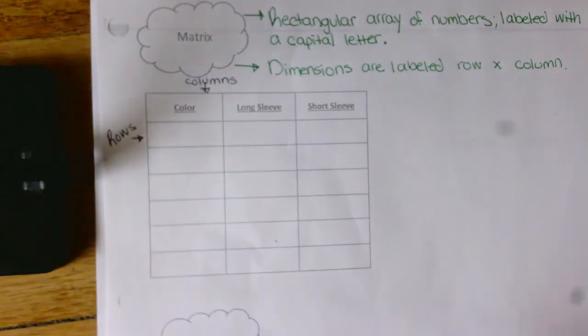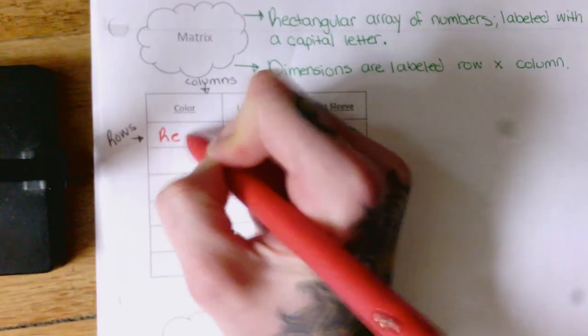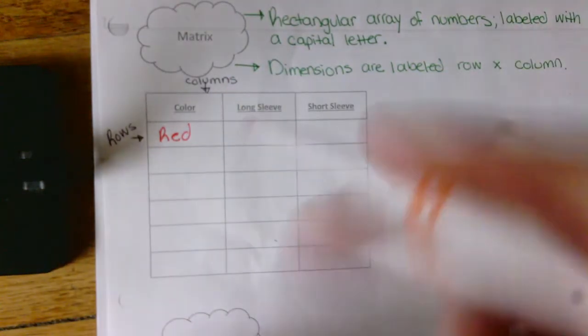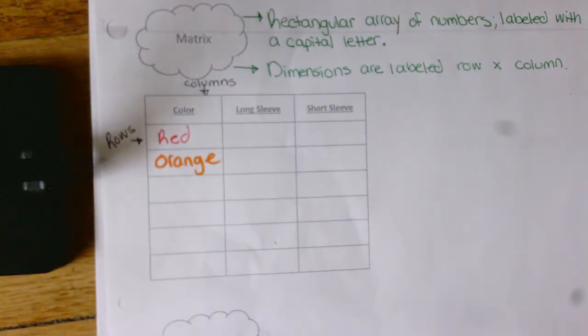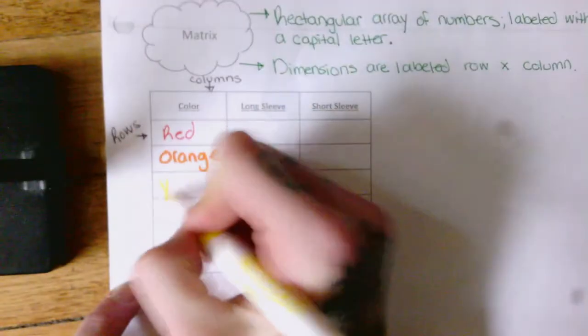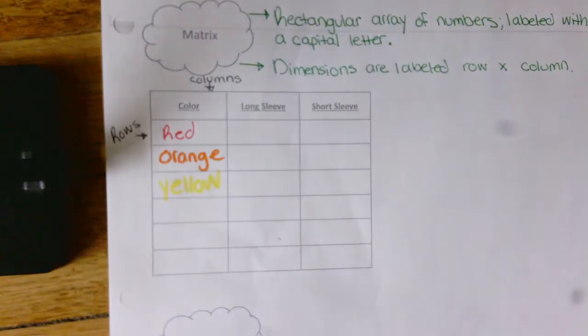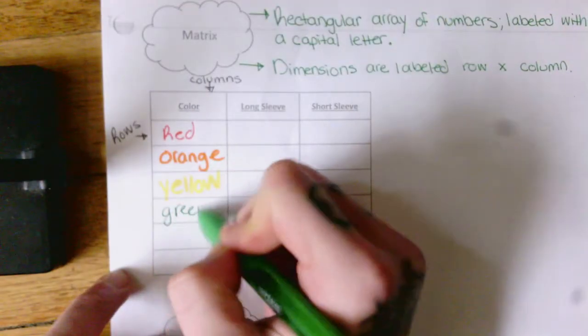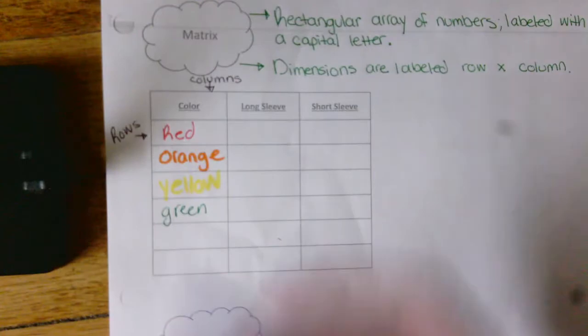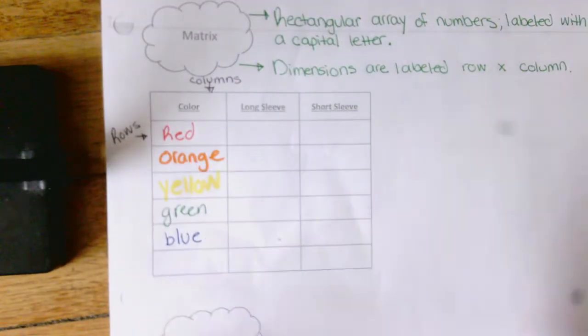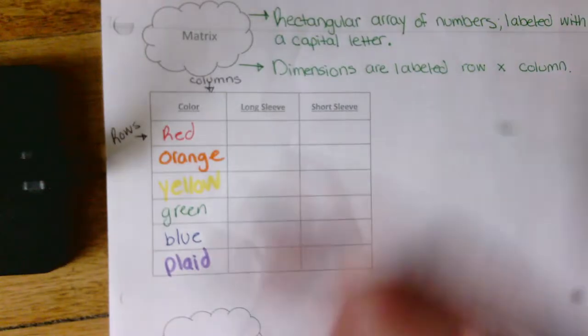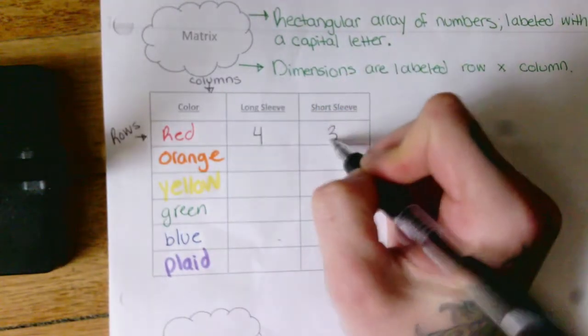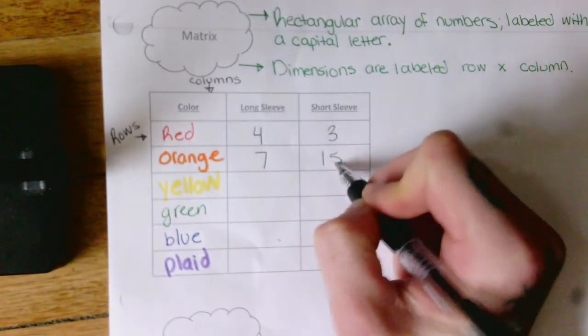Let's say we own a t-shirt store. Real colorful t-shirts. We have red shirts, and we have orange shirts, and we have yellow shirts, and we've got some green shirts, and we've got some blue shirts, and you'll never guess what's next. Plaid. Oh, a trick there.